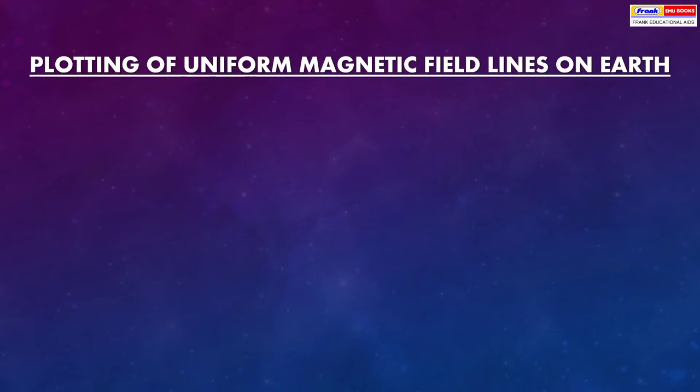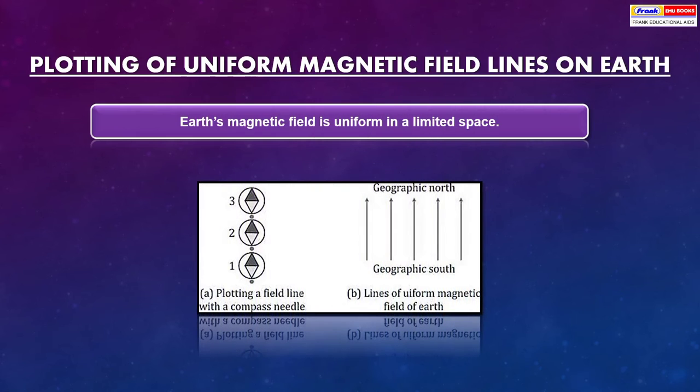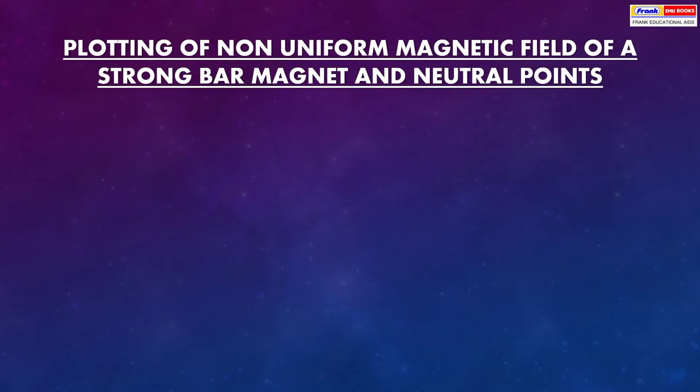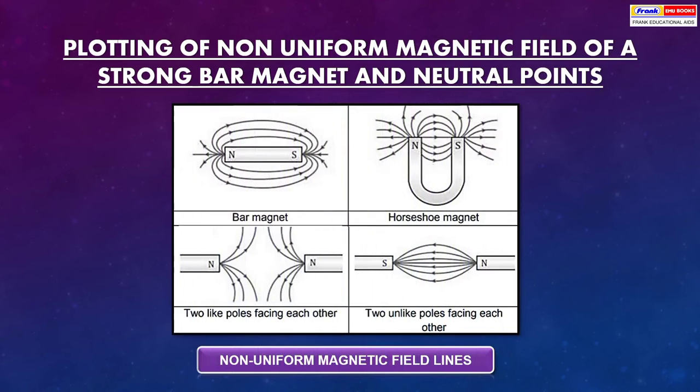Plotting of uniform magnetic field lines on earth. Earth's magnetic field is uniform in a limited space. Plotting of non-uniform magnetic field of a strong bar magnet and neutral points. You can see in bar magnet and horseshoe magnet.